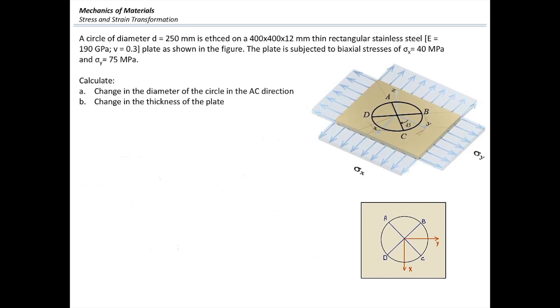A circle with a diameter of 250 is etched on a rectangular stainless steel plate. The dimension of the circle and the dimension of the rectangular plate are also provided. We want to know if the plate is subjected to two stresses in the x and y direction, how much would be the change in the diameter of the circle in the AC direction and how much is the change in the thickness?